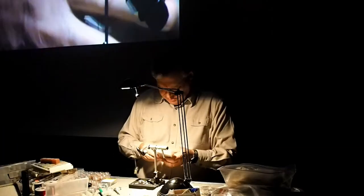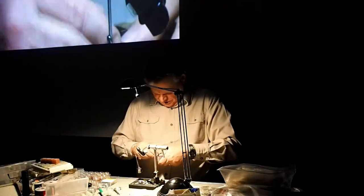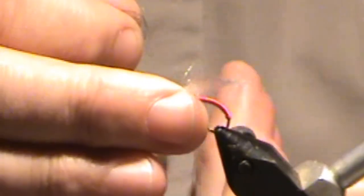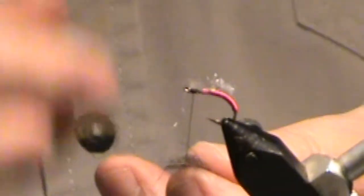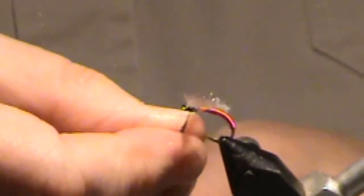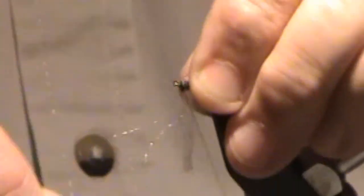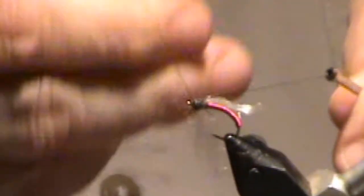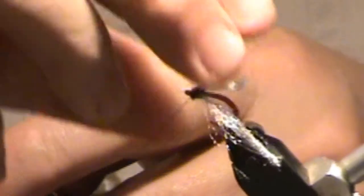Take some dark dubbing. Something fuzzy, something with a little flash in it maybe. It doesn't really matter. You just need a very little bit. A vise that won't hold the hook. And just wrap it up.